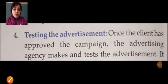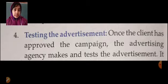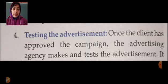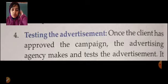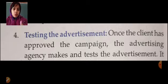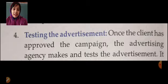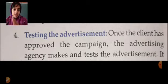Next we will continue with the fourth point: testing the advertisement. Once the client has approved the campaign, the advertising agency tests the advertisement. They have different clients with them. These clients are basically the audience — a particular audience. They are not common audience; they are big businessmen or big stars. The agency shows the advertisement to these clients to indicate that the campaign has started.